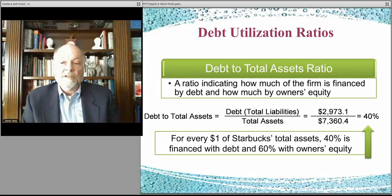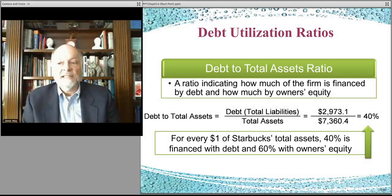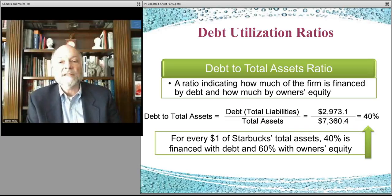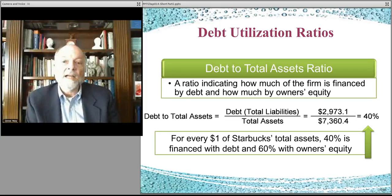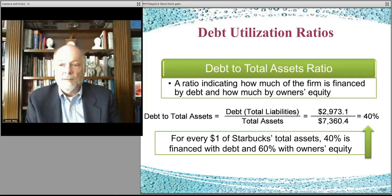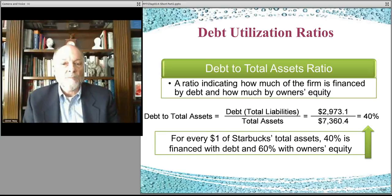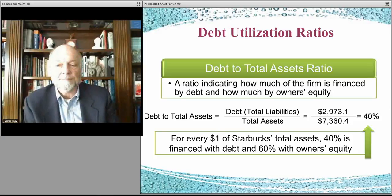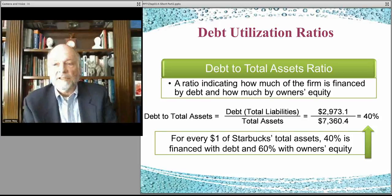Debt-to-total assets, as you would expect: you take your total liabilities, divide those by total assets, and in this particular case you come up with a 40 percent ratio. That means your business is 60 percent owned by the shareholders and 40 percent is encumbered by the debt holders — by the people that hold the paper that can come back and collect on their loans to you if they need to do that. So that's the debt-to-total asset ratio.